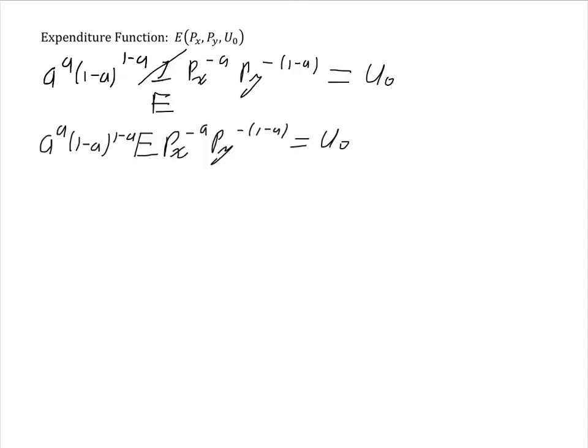To find the expenditure function, we set the indirect utility function equal to the desired level and substitute E for I. In our previous example, we had a^a (1-a)^(1-a) I Px^(-a) Py^(-(1-a)). We now set that equal to U₀. To get the expenditure function, we replace I with E.